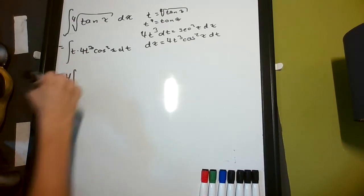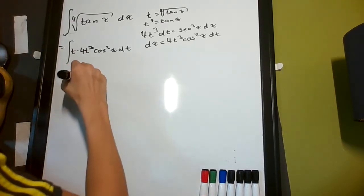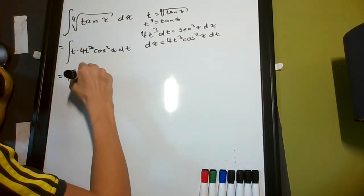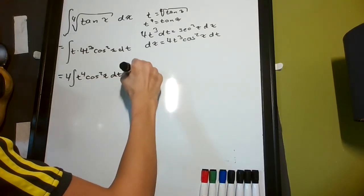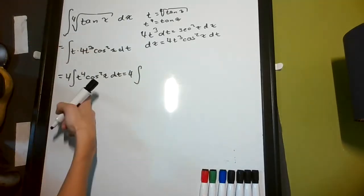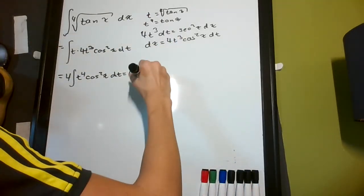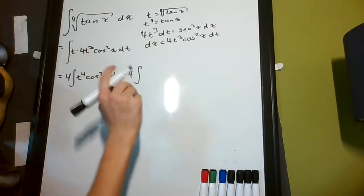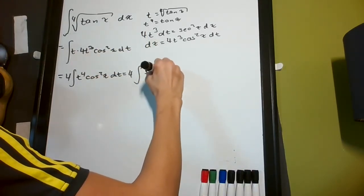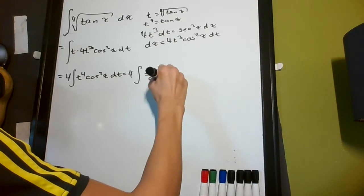It's going to give us 4 times the integral of t to the 4th cosine squared x dt, which, plugging in for t to the 4th equals tangent x, I get tan, and plugging in that tangent x is sine of x over cosine x.